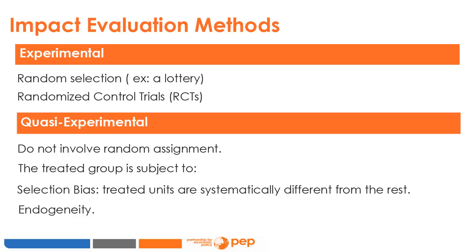There is a selection bias when some members of the population of interest are less likely to benefit from a treatment than others. This means treated units are systematically different from the rest of the population and thus are not directly comparable to non-treated units. The two groups may differ in observed characteristics, but more importantly, they might systematically differ in unobserved characteristics which cannot be controlled for statistically. This identification problem is formally called endogeneity. The best way to separate a treatment effect from a selection bias is to conduct an RCT, since random assignment ensures equivalence in both observed and unobserved characteristics.